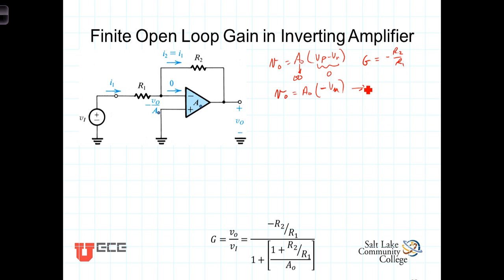Or we can then solve for V sub N. V sub N, the voltage at the inverting terminal, is equal to Vout over negative A0. So we now have, using this expression here, we've calculated an expression for V sub N. You'll notice that because A0 is not infinite, the voltage here is not exactly the same as the voltage at the non-inverting terminal.